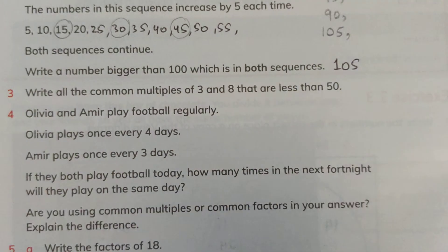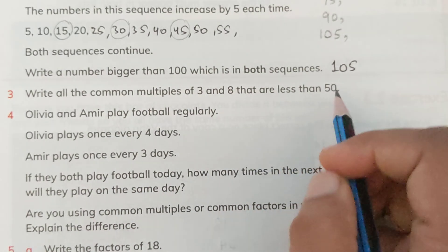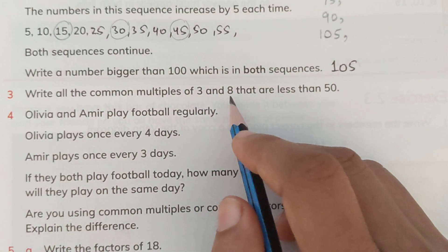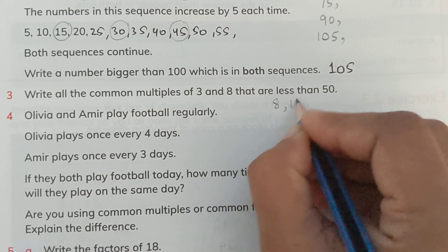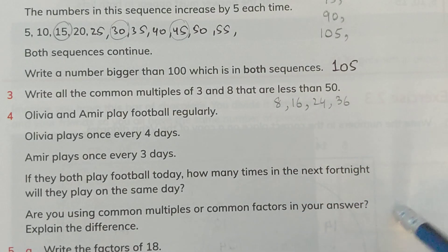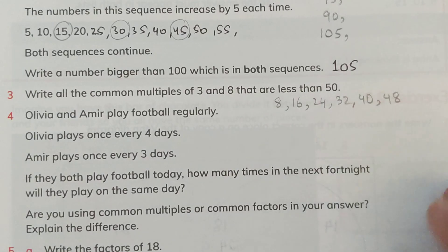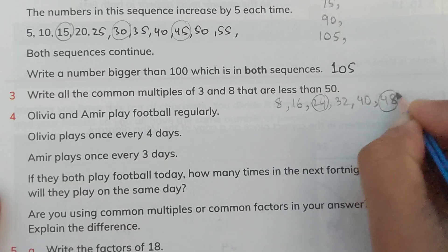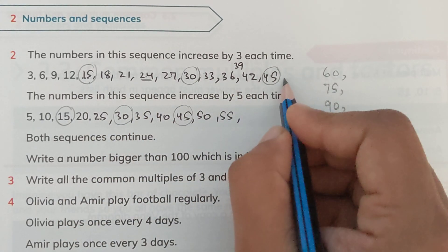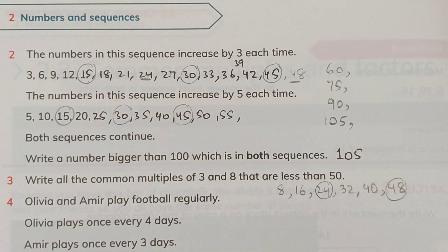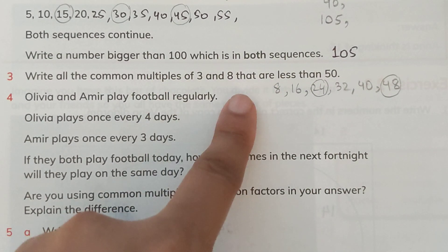From this we can conclude it includes all multiples of 15 that are bigger than 100. Then question number 3 says: write all the common multiples of 3 and 8 that are less than 50. We write the multiples of 8 up to 50: 8, 16, 24, 32, 40, 48. Among these, only 24 and 48 are also multiples of 3, so 24 and 48 are the common multiples of 3 and 8 that are less than 50. Note that 3×8=24 and all multiples of 24 are common multiples of 3 and 8.